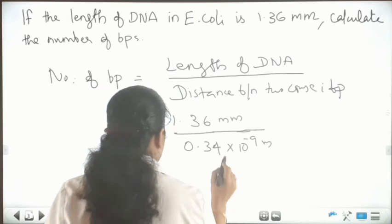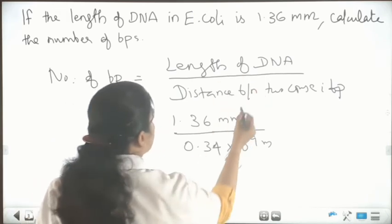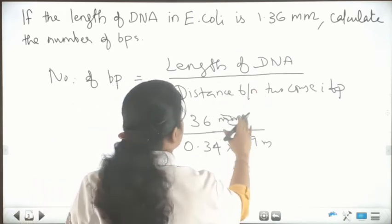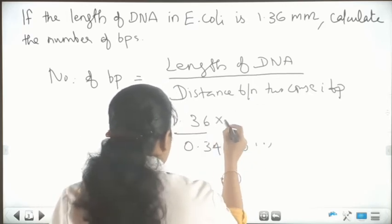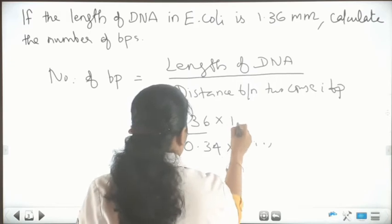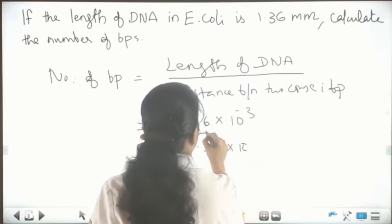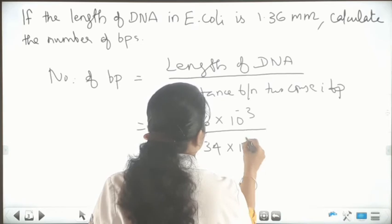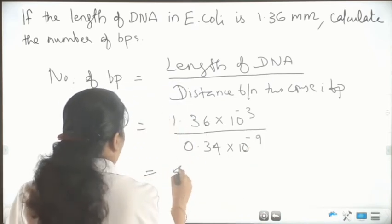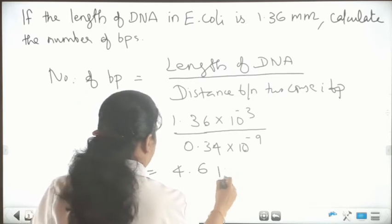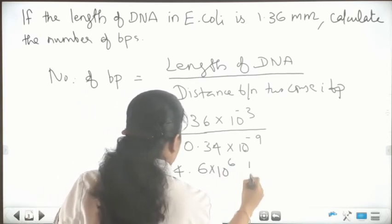We can calculate over here. We convert 1.36 millimeter into meter: 1.36 into 10 raised to minus 3 meter. Dividing by 0.34 into 10 raised to minus 9, we get 4.6 into 10 raised to 6 base pairs. So this is the number of base pairs.